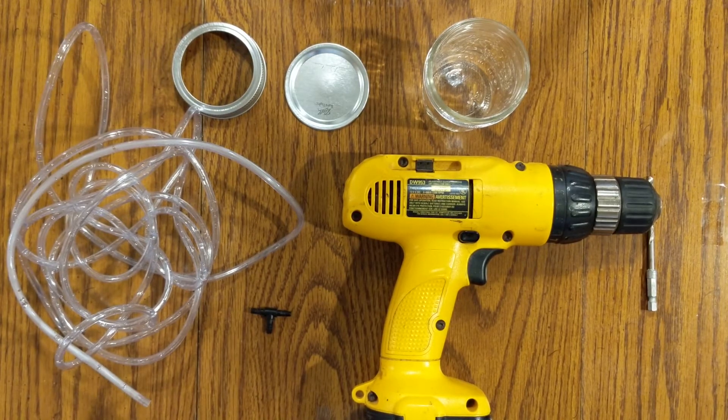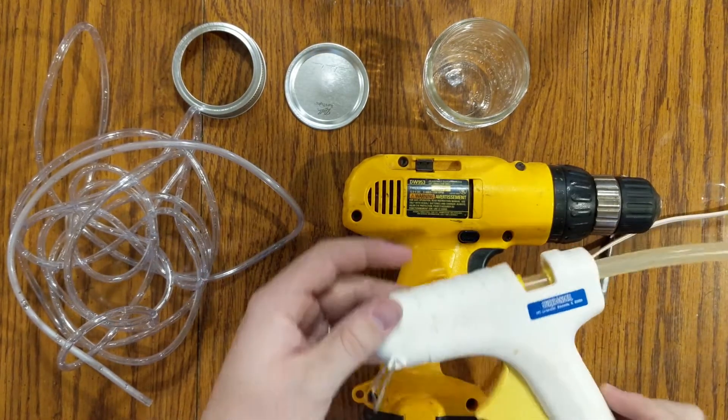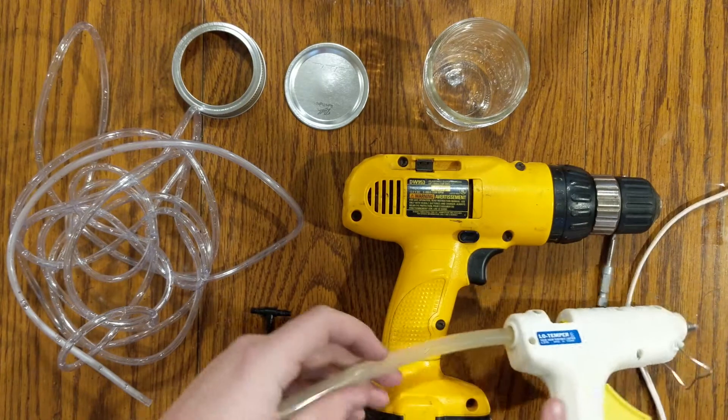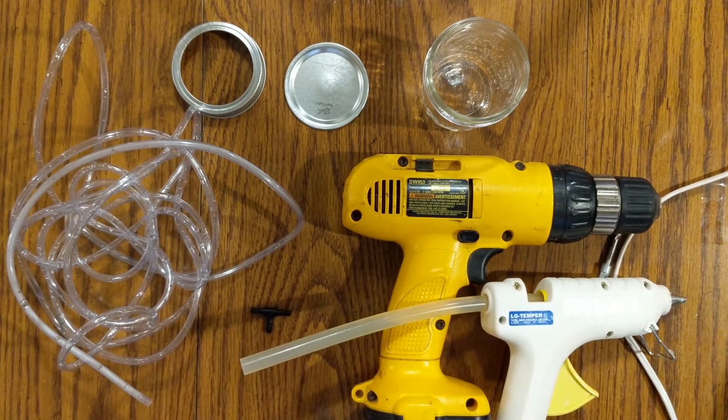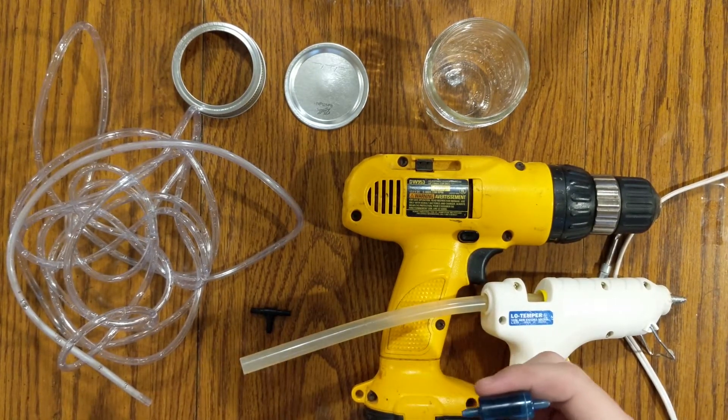A T for the air hose, a hot glue gun, and last but not least, a check valve, very important.